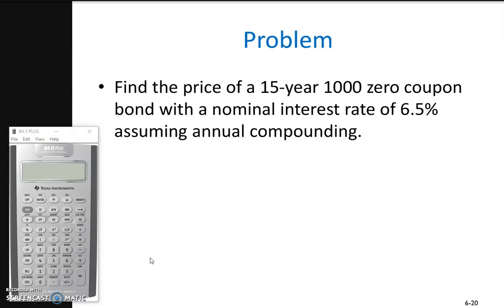The face value of the bond equals $1,000. Since the bond is a zero coupon bond, it does not pay any interest or coupon payments. Therefore, PMT is equal to zero. The interest rate given to us is the nominal interest rate of 6.5% with annual compounding.